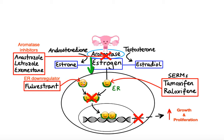Because GnRH agonists initially stimulate the pituitary gland, leading to a surge in testosterone levels and under certain circumstances a flare-up of the tumor, scientists have been developing GnRH antagonists that do not cause a surge in testosterone or clinical flare. An example is degarelix, which works by blocking the receptor for gonadotropin-releasing hormone in the pituitary gland, thereby reducing the release of luteinizing hormone, causing a rapid, sustained suppression of testosterone release from the testes and subsequently reducing the size and growth of prostate cancer.